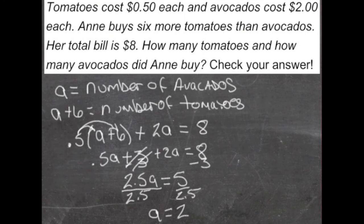Now if a is the number of avocados and a is 2, then she had 2 avocados and 2 plus 6, or 8 tomatoes.